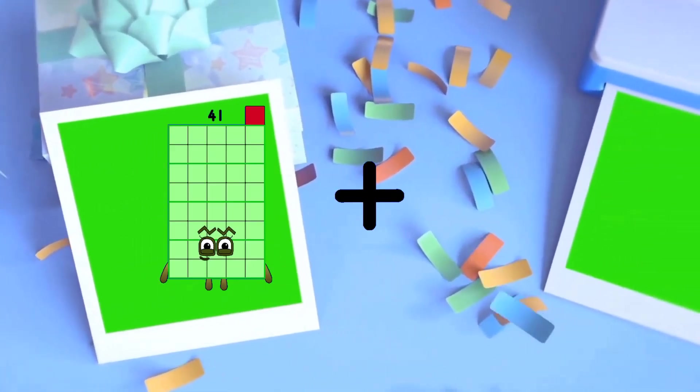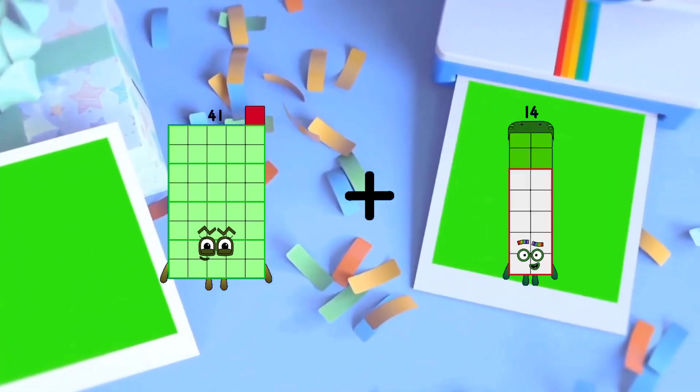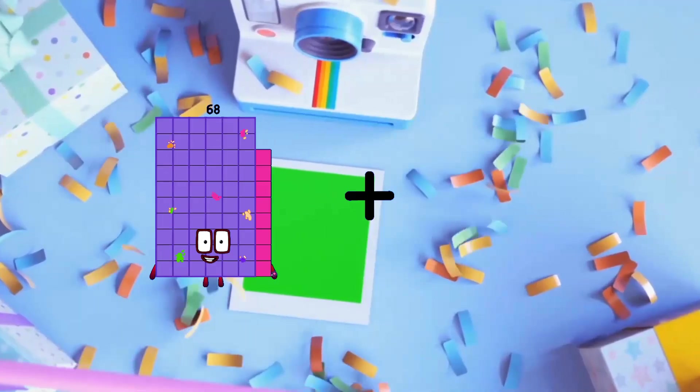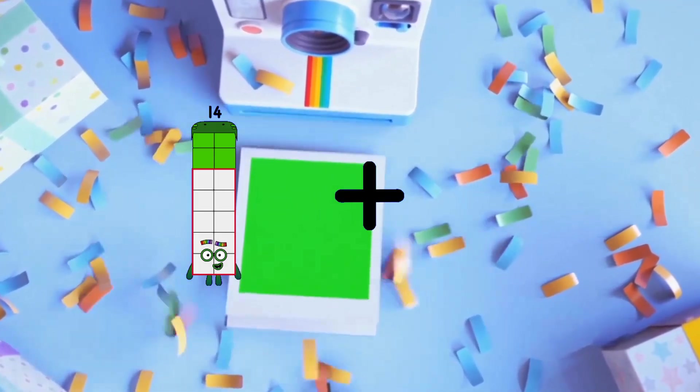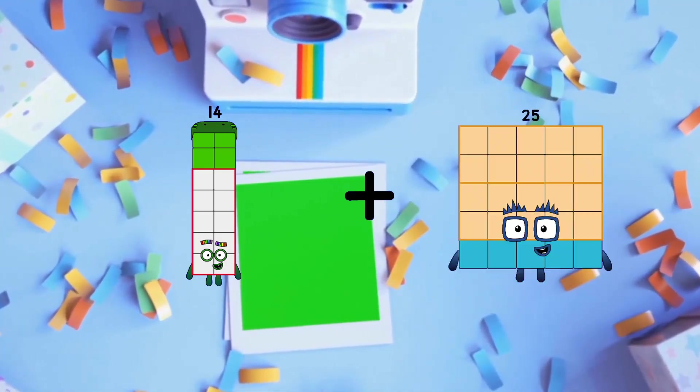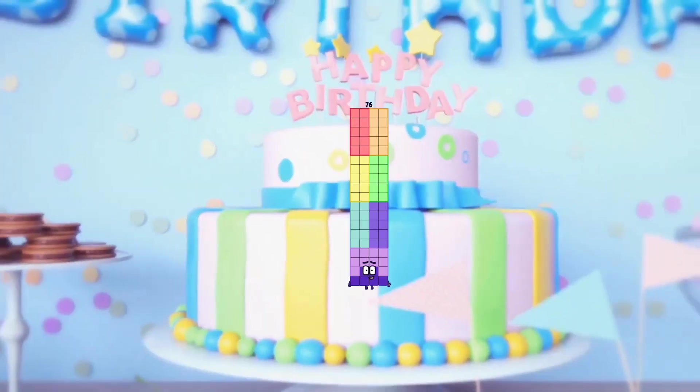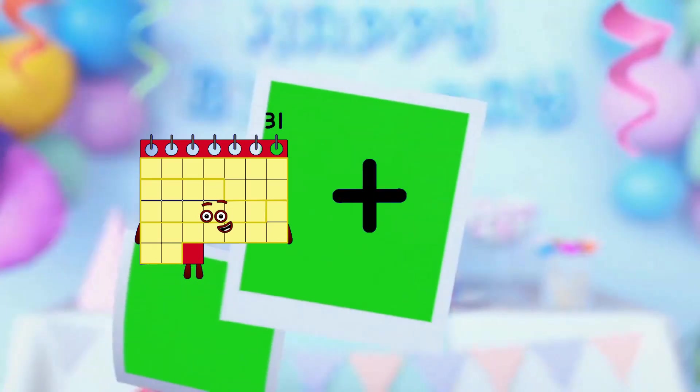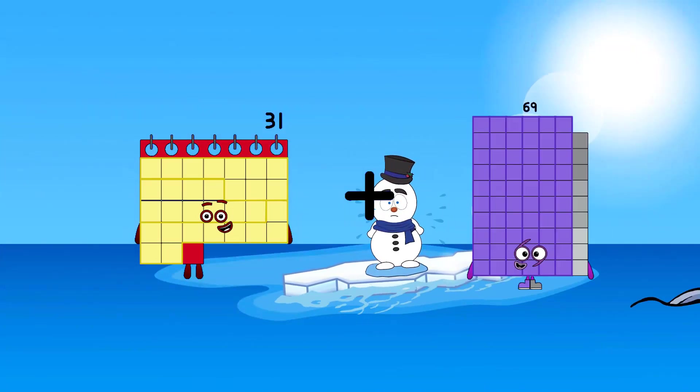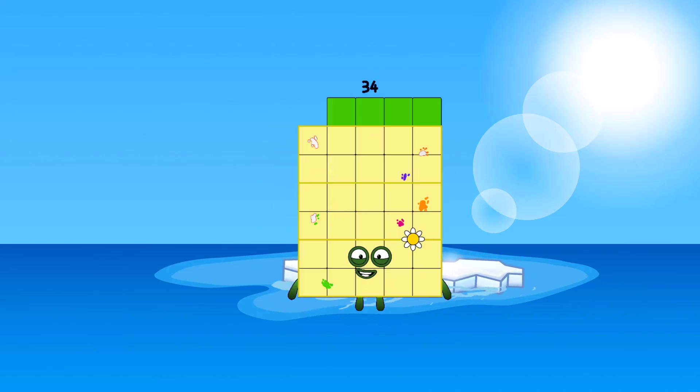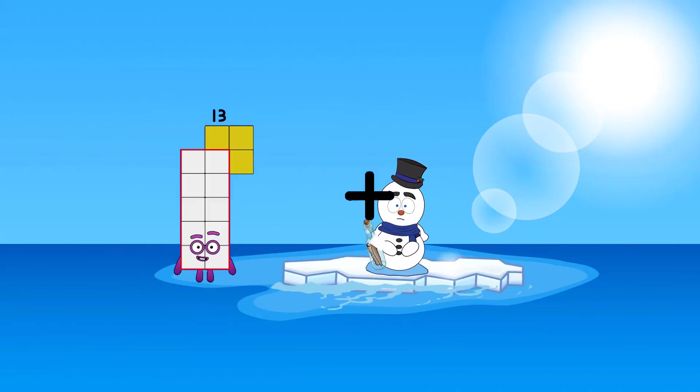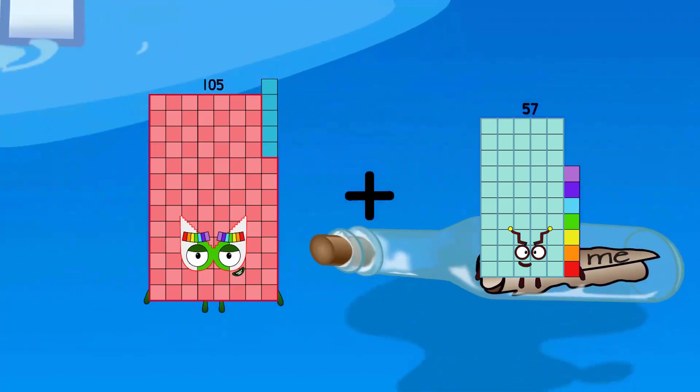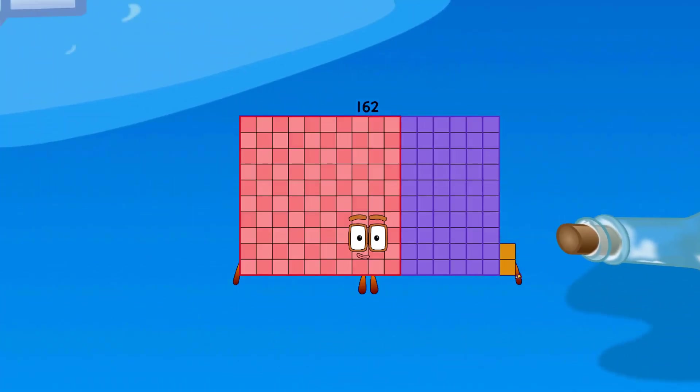41 plus 2 equals 43. 14 plus 62 equals 76. 31 plus 3 equals 34. 105 plus 57 equals 162.